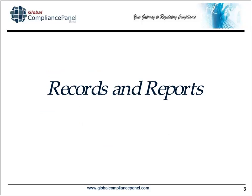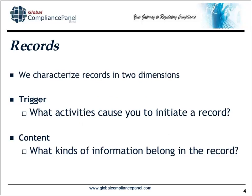Let's start by looking at records and reports. In a quality management system, in FDA parlance, if you didn't write it down, it didn't happen. Records are very important, particularly during inspections and audits. We're going to characterize records in two dimensions. The first is the trigger — what activities caused you to initiate a record. The second is the content — what kinds of information belong in the record. Very often there are prescribed elements in a record, as well as additional information you might want to keep.